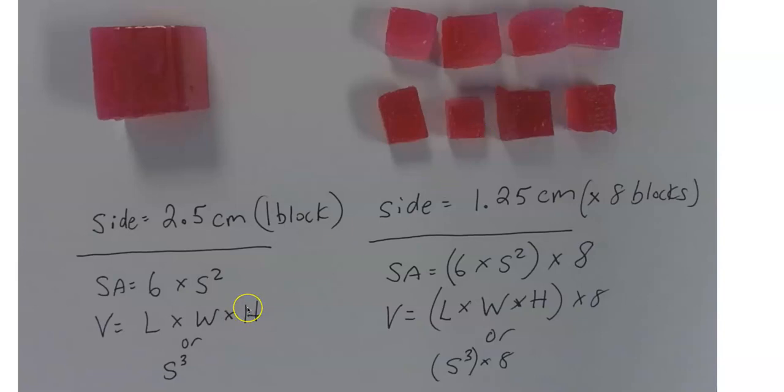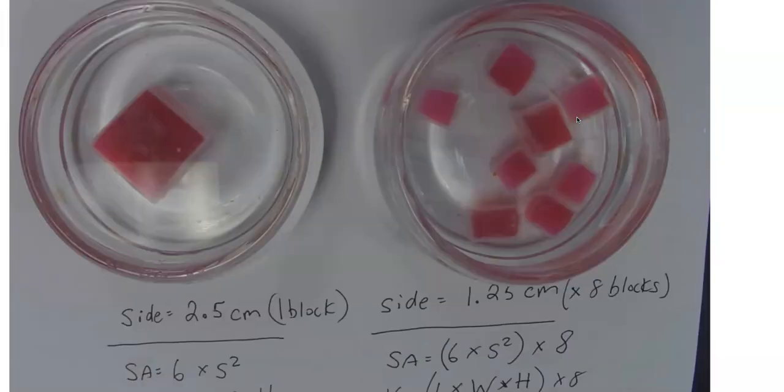Finally, you have to calculate the surface area to volume ratio. To do that, take the surface area number and divide it by the volume. That's the number that represents the ratio. I want you to observe that the large block has a specific surface area to volume ratio, and all of the small blocks have a different surface area to volume ratio. We'll get to that at the end.